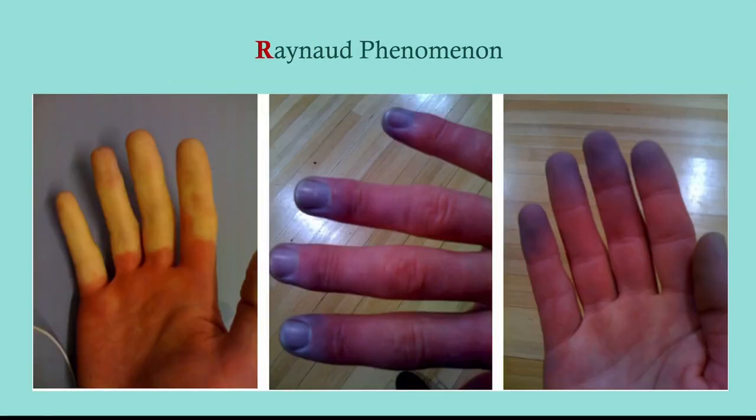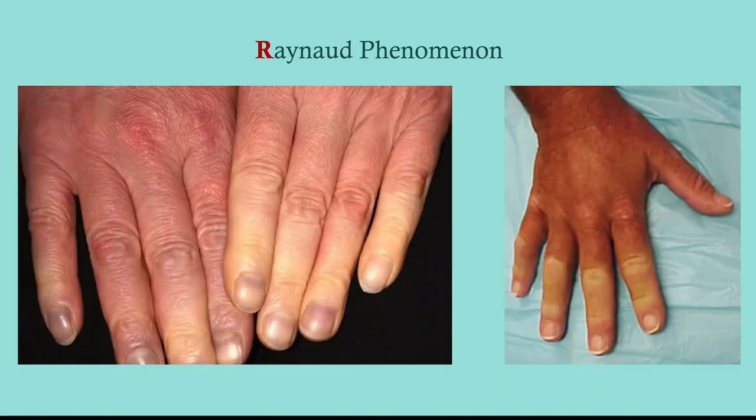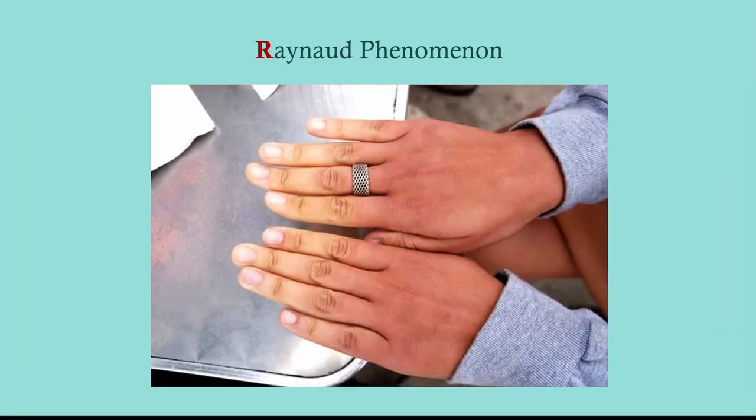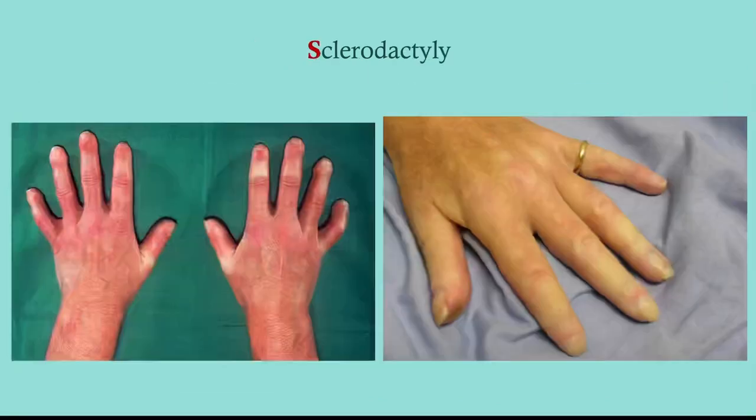Raynaud's phenomenon is vasospasm — you should know what it looks like. You get blanching of the fingers, and if it's severe enough you can get cyanosis. Often it only occurs in one hand so you can compare the two. It's a fairly easy thing to diagnose, and while it's not specific to CREST, it is commonly seen.